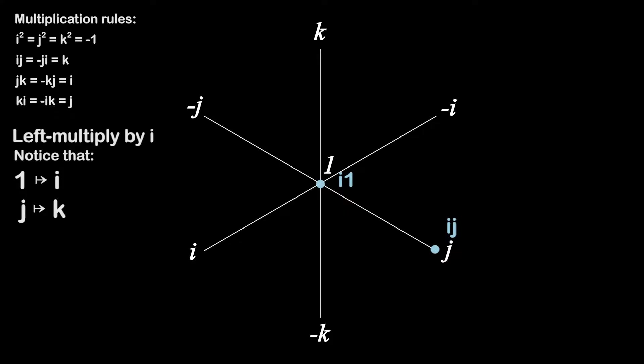Let's watch that again, this time only focusing on what happens to 1 and j. First, left multiply both by i. i times 1 is just equal to i. And i times j, according to the definition of quaternion multiplication, equals k.